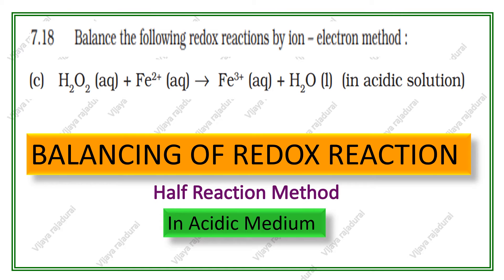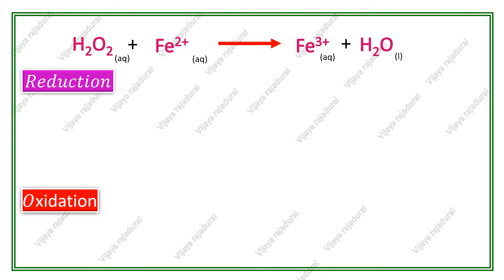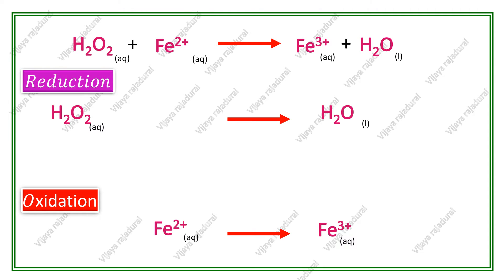The half-reaction method and ion-electron method are both the same. The first step is splitting of the equation into the reduction and oxidation reactions. In H2O2, the oxidation state of oxygen is minus 1. In water on the product side, the oxidation state is minus 2. Since the oxidation state decreases from minus 1 to minus 2, H2O2 gives H2O is the reduction reaction. Fe2+ gives Fe3+ is the oxidation reaction, because the oxidation number increases from 2+ to 3+.